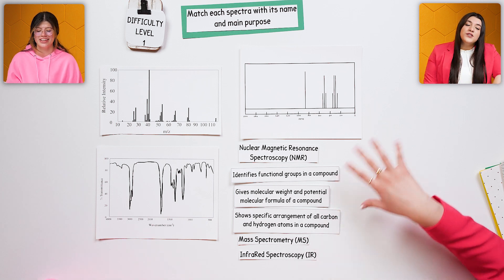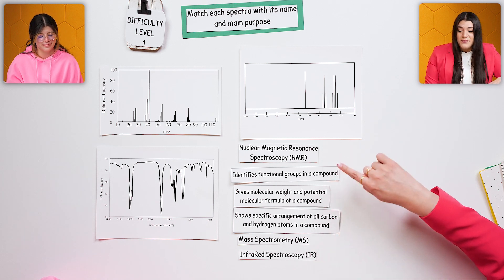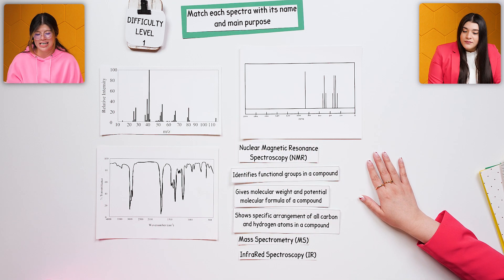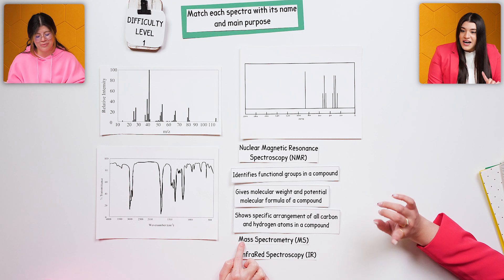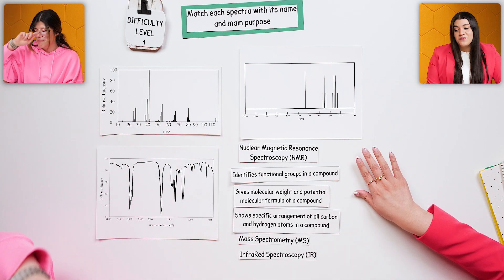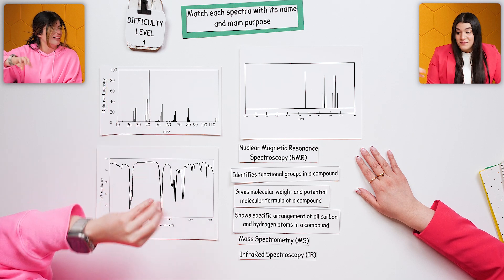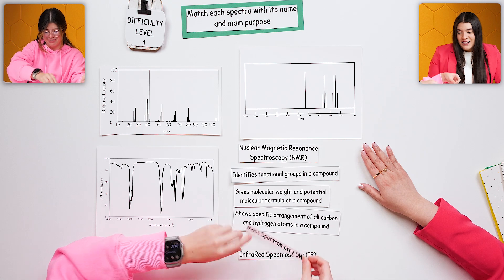Let's start with the first one. This first one is match each spectra with its name and the main purpose. Let's start here. That one is NMR. Oh, wait, no, mass spectra. Good. How did you know? I get confused because they both look similar. They do look similar. But this one has the mass, the m/z, so you have your base peak. Good. Mass per charge. Yes. You're right. This guy.